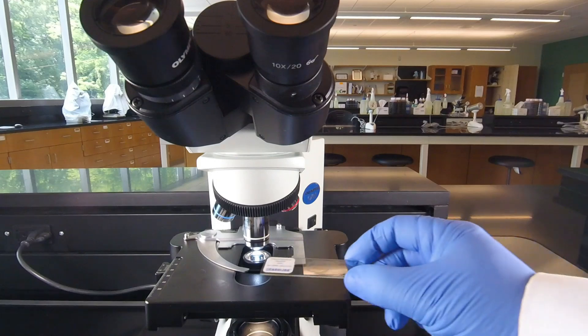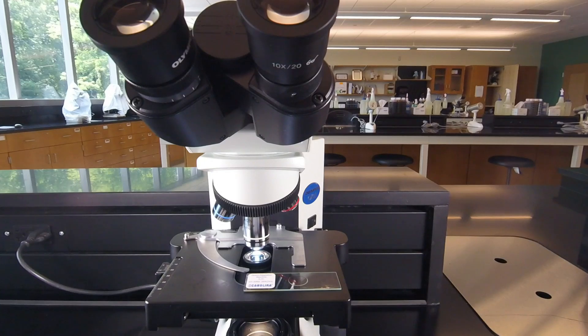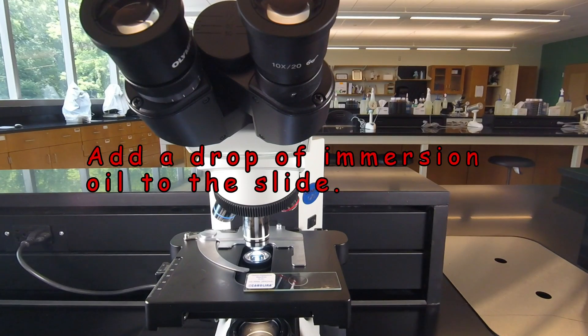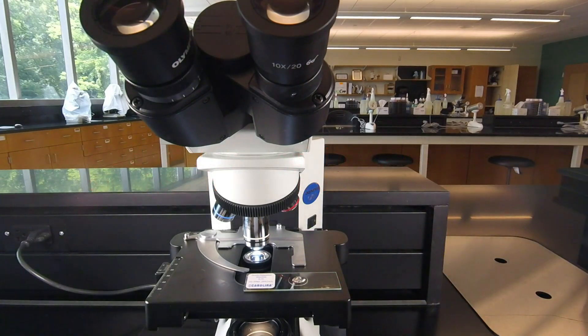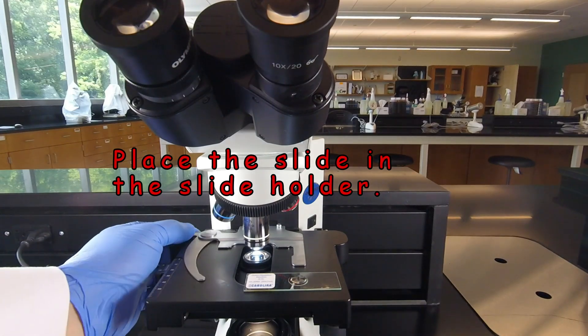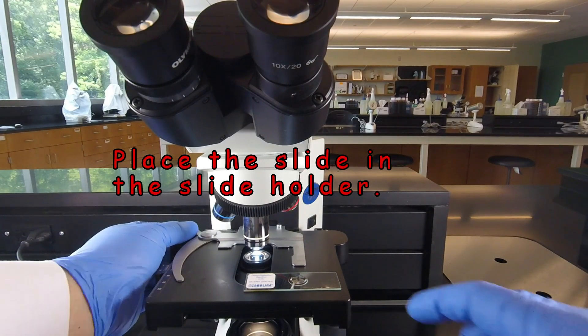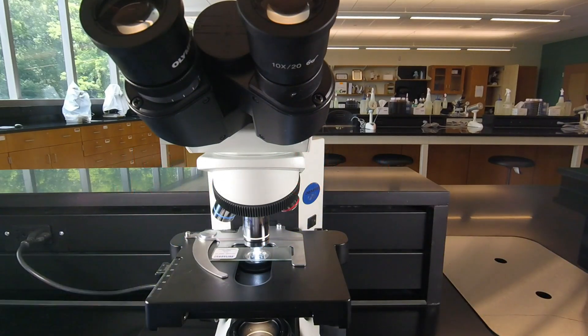Next, we want to place the slide in the slide holder of the mechanical stage. Since we are using 1000x magnification or oil immersion microscopy, we need to add a drop of immersion oil to the area of the slide where we'll be viewing. Once we have our drop of oil on the slide, then we can push this knob back to open up the arm, place the slide all the way back in the slide holder and release the arm.